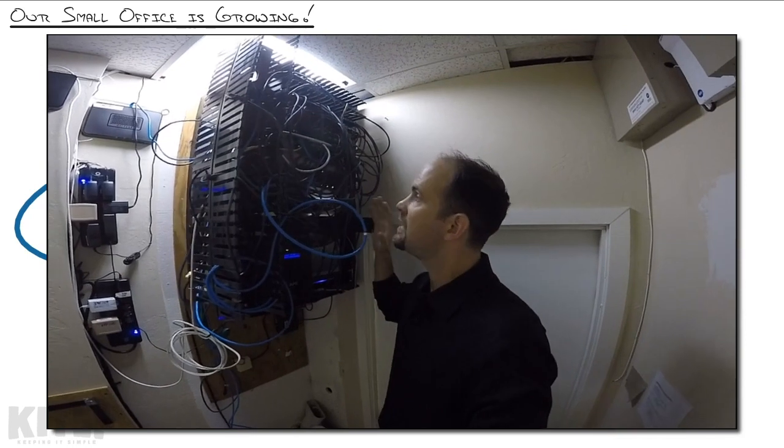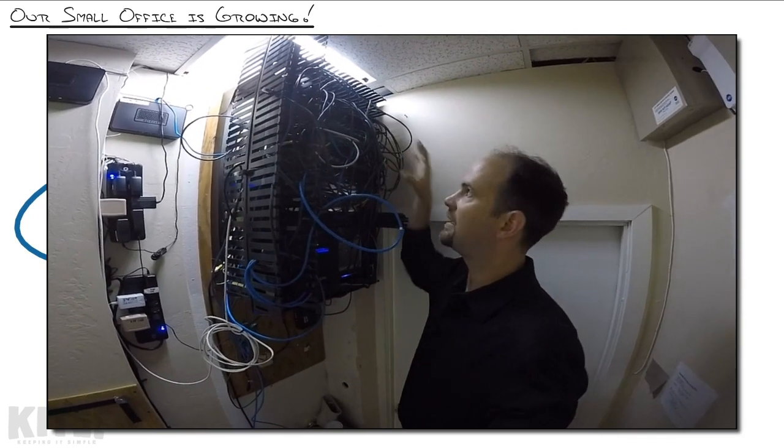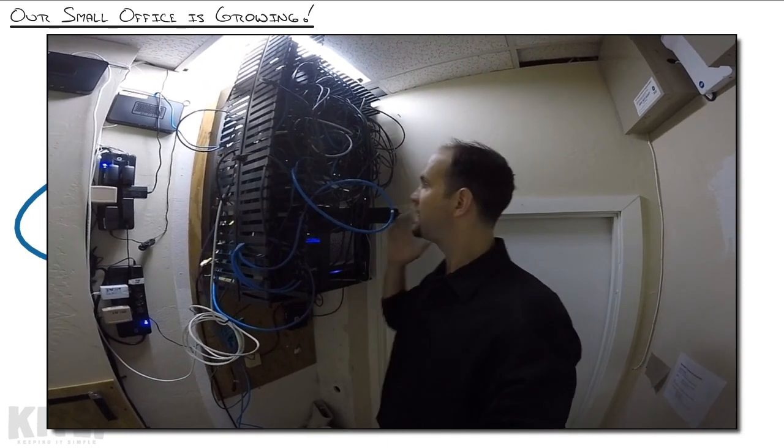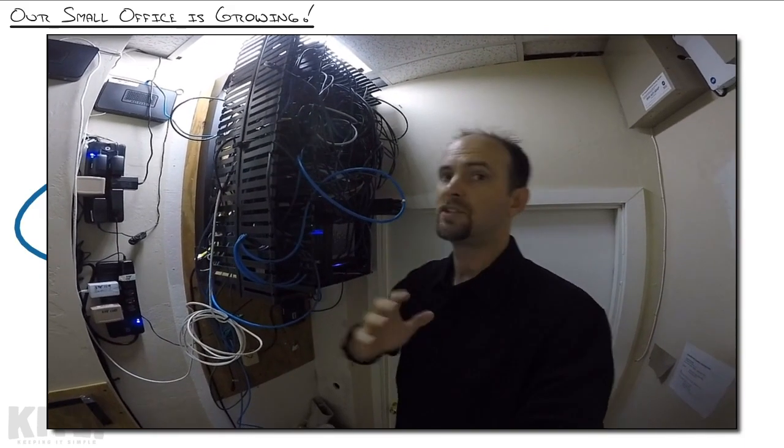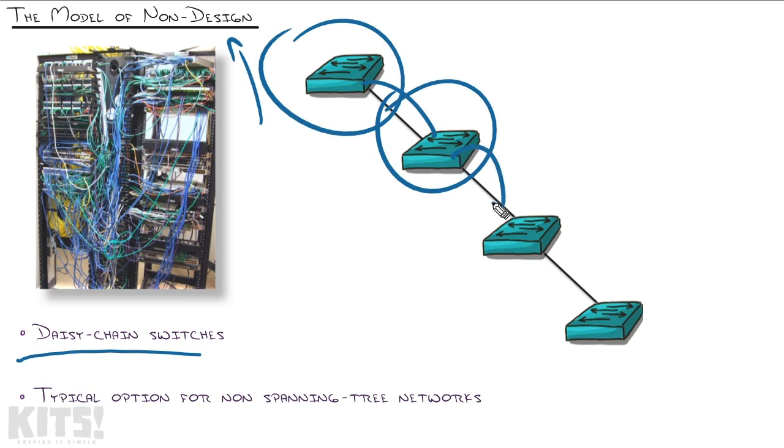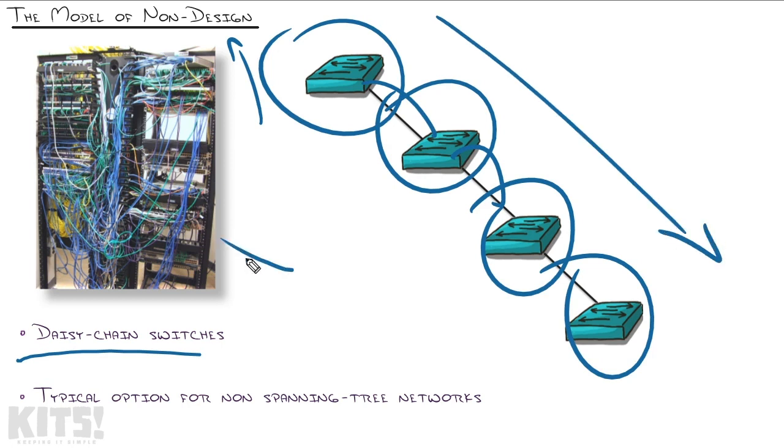So now here's the dilemma. We've got two switches that are connecting this office and connections that are running over there. This is beyond just connecting two switches together with redundant connections. How should we connect these two switches to those two switches? Well, you could just start daisy chaining those switches together, which is what I call a model of non-design. Take the two switches in Suite 1, connect them together, run a line over to Suite 4, connect those together with one cable, and now you have this long chain of switches which in the end leaves your network typically looking like this.